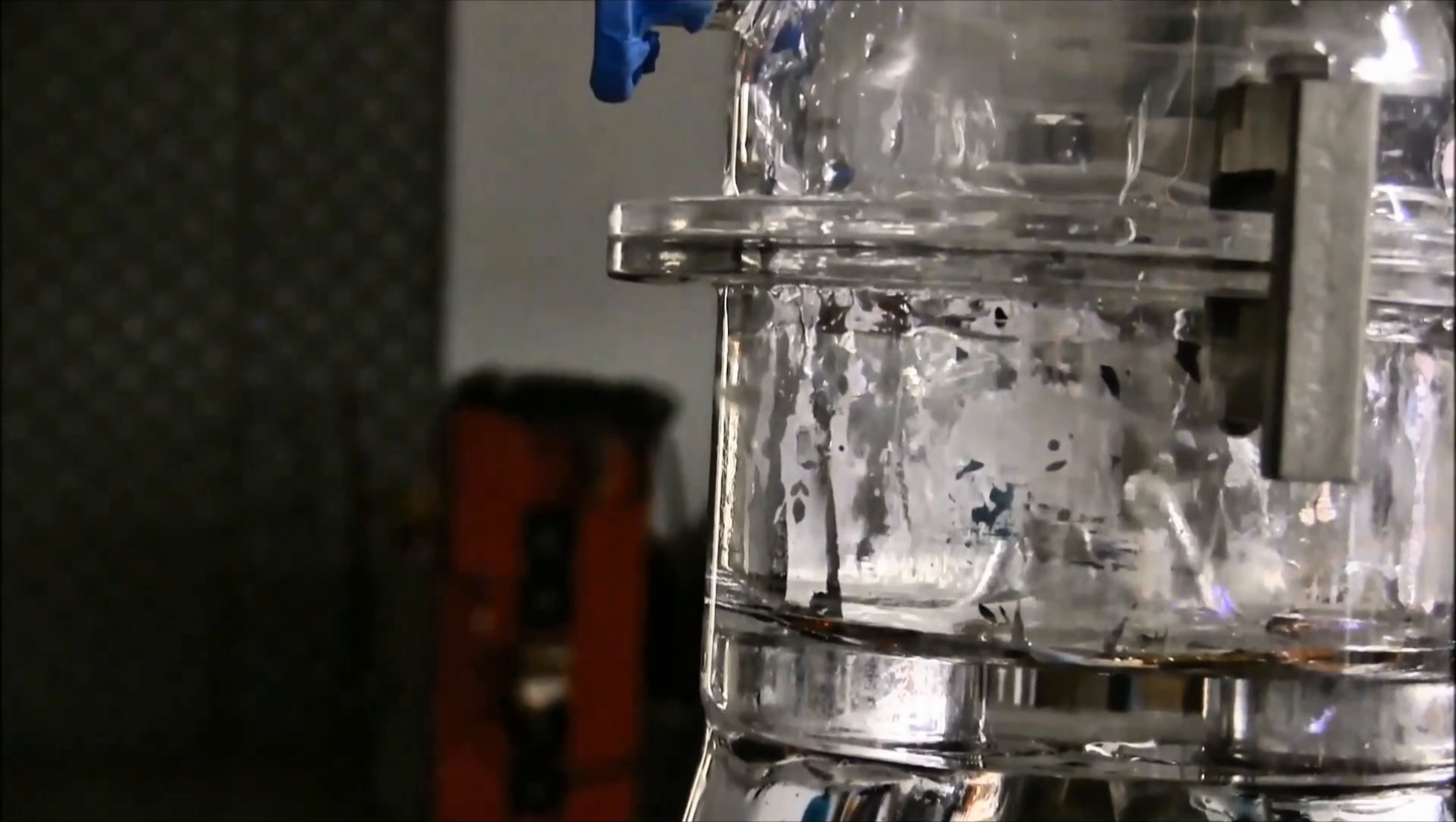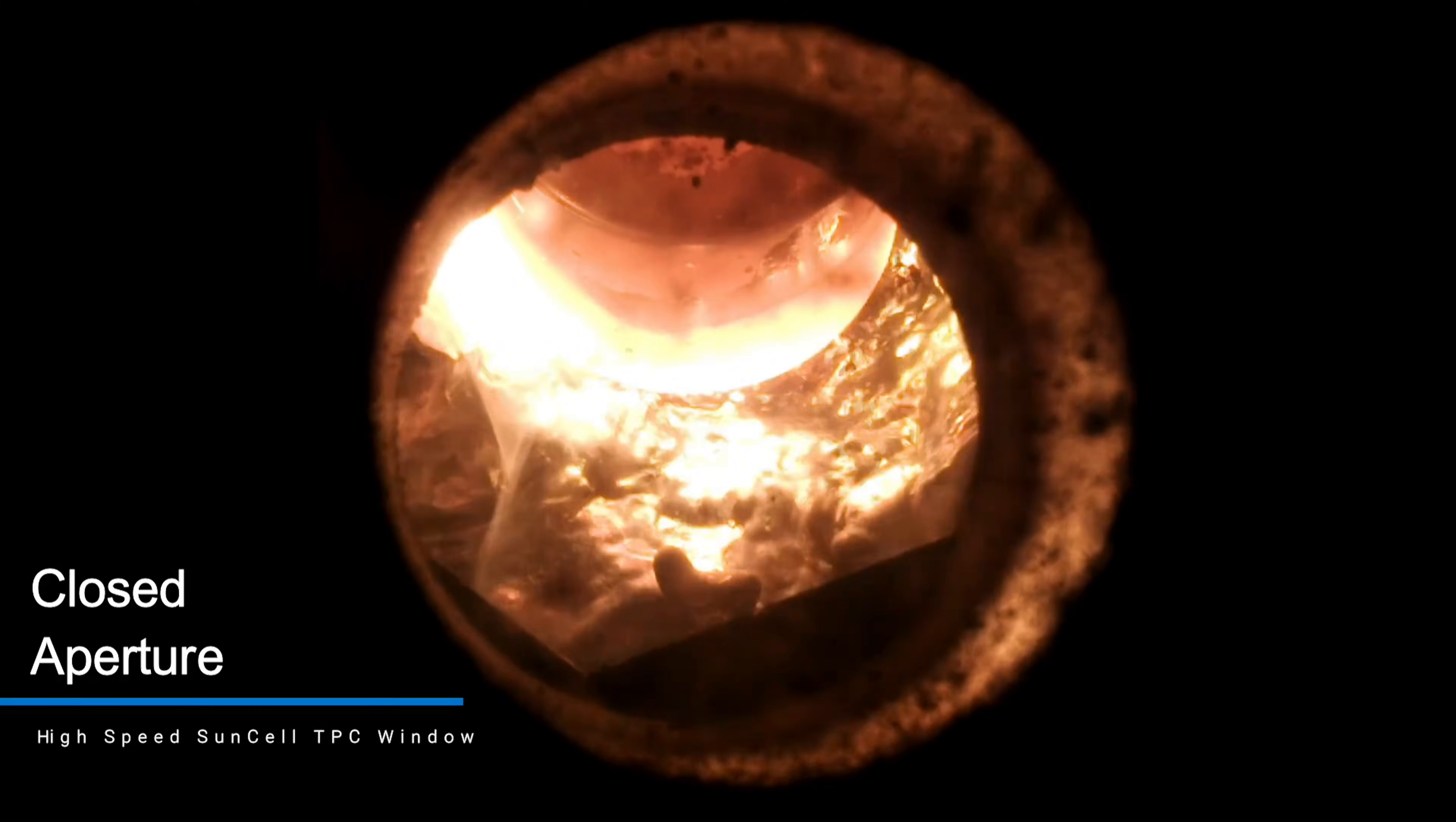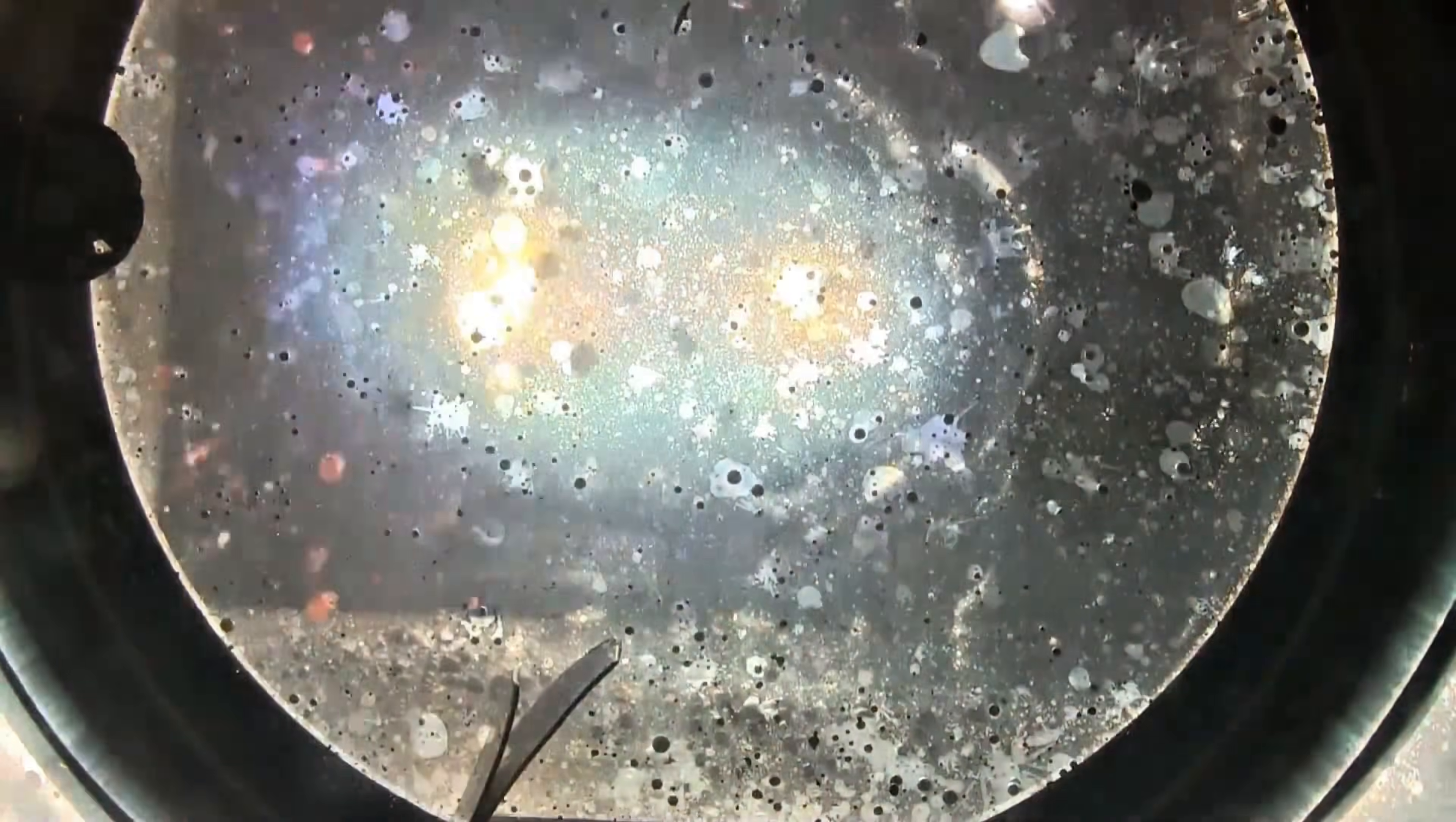So, how does this translate into a real-deal generator that powers your home? Enter the SunCell. The star of the show. A compact beast that's like a mini-sun in a box. Here's how it works. Step by thrilling step. First, the SunCell takes ordinary water. Yep, from your faucet, or even the humidity in the air, and splits it into hydrogen using a clever catalyst system. Then, in a sealed plasma chamber, electrodes ignite a reaction, injecting molten silver or other metals to create an intense, glowing plasma. This plasma triggers the hydrogen atoms to form hydrinos, unleashing a brilliant flood of high-energy light, brighter than the sun itself in tests.